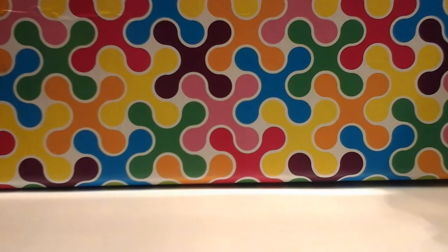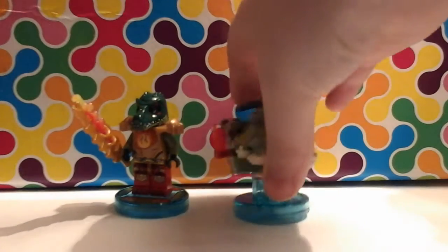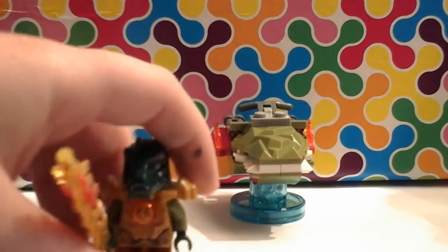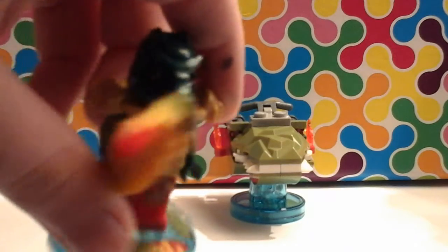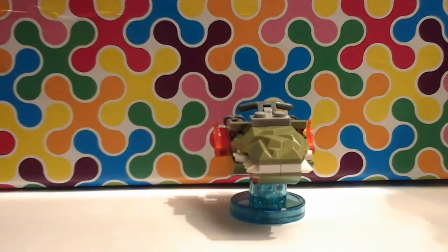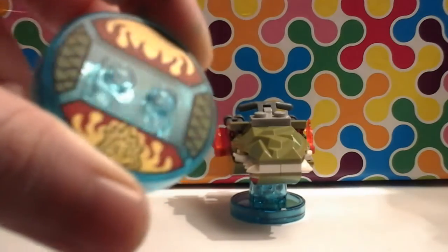Next we've got Kragger and the swamp skimmer. So here's Kragger. It's kind of like a crocodile guy with a fire sword and armour on. And here's his base. There's fire on it and kind of like leathery skin.